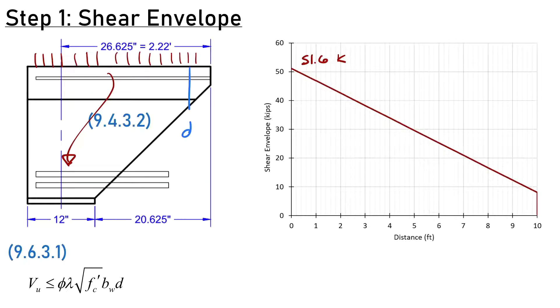The position of my critical section is a distance D away from the face of the support. For this problem, D is 20.625 inches. From the center of my support out to the edge and then to my critical section is 2.22 feet. Drawing a straight line where it intercepts at 2.22 feet, we find my shear is 41.6 kips. That's the ultimate demand I need to design for at those ends.